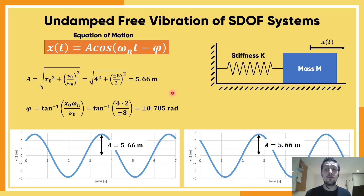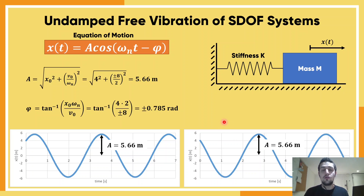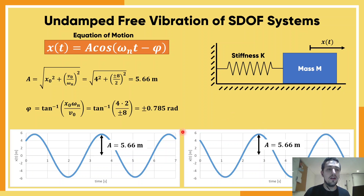Finding this amplitude is very important for engineering because it represents the maximum displacement. Since we are studying a structure as a single degree of freedom system, knowing the maximum displacement is crucial: from it you can determine the maximum stress, the maximum strain, the maximum acceleration — whatever you need for your design.